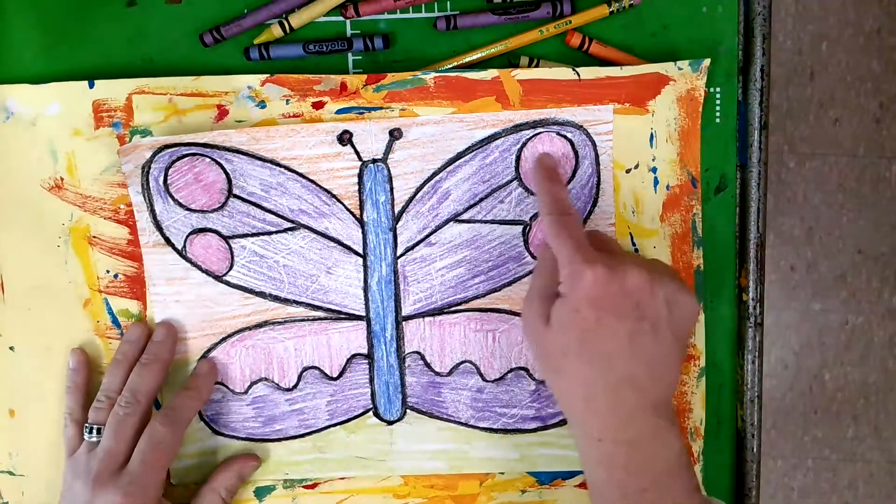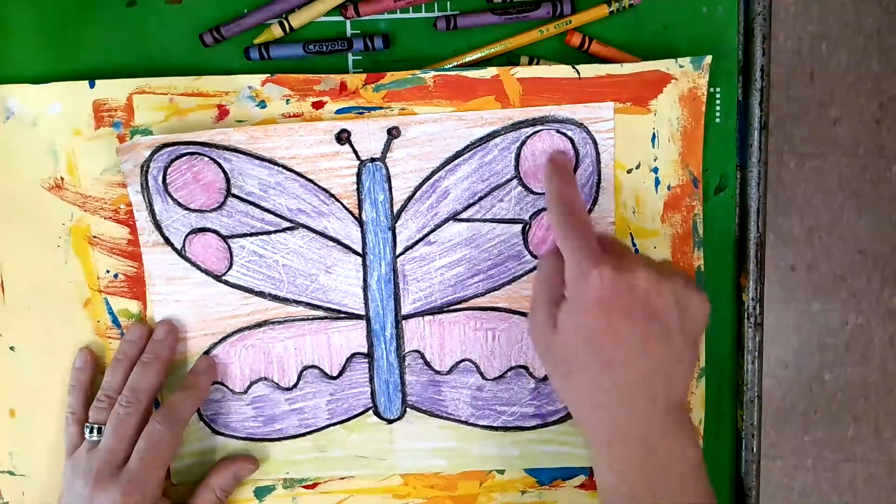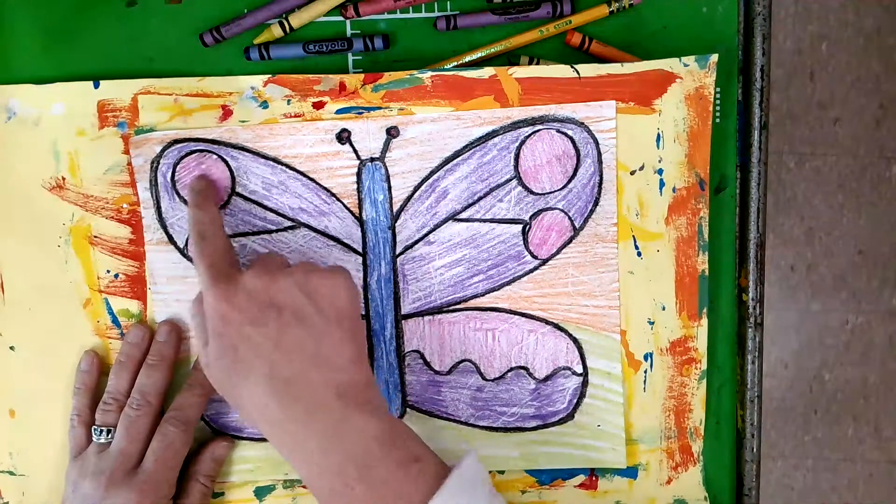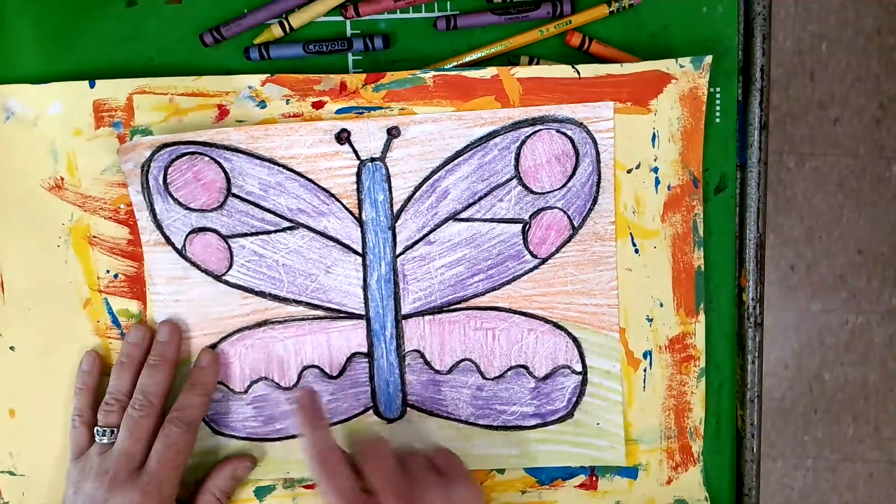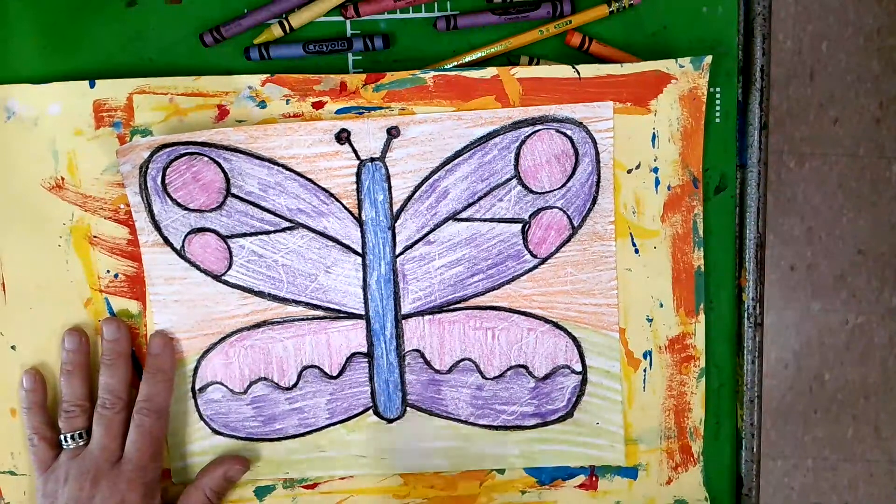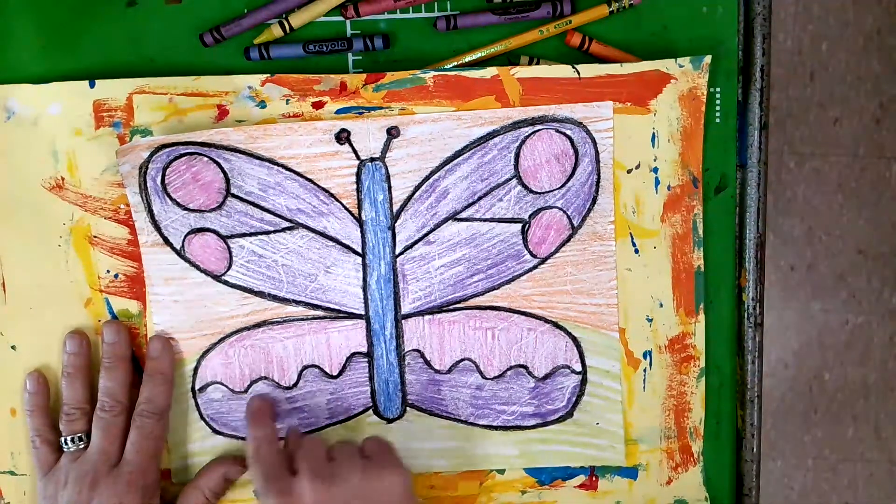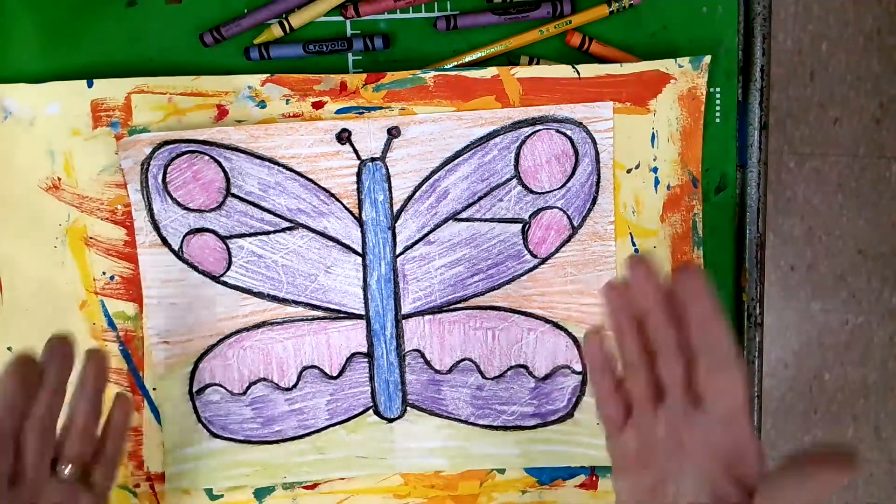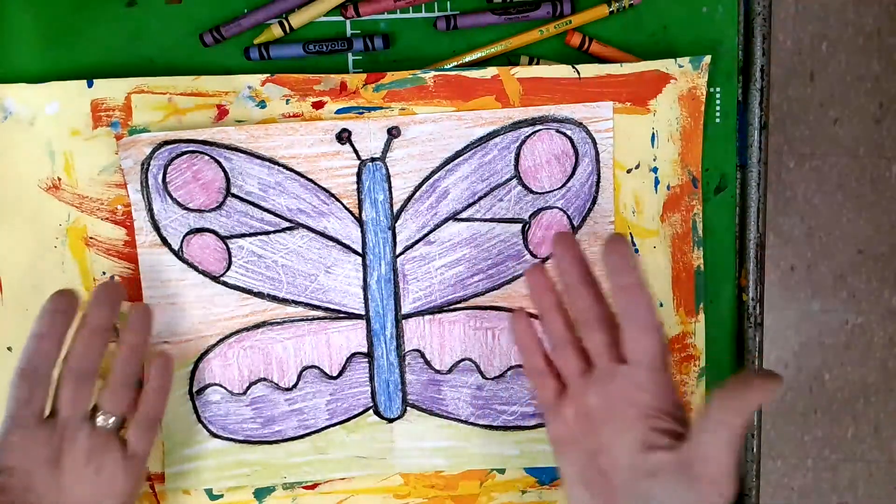Which means, if I colored these two circles pink, then I also colored these two circles pink. If I colored this portion of this lower wing purple, then I also colored this portion of this lower wing purple. The color also can be symmetrical.